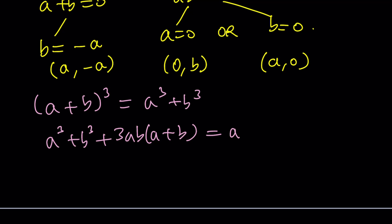If you're not familiar with this identity, that's fine. You just need to factor a little bit. a cubed plus b cubed cancel out, and we end up with the same thing. Divide by 3, you're going to get ab times a plus b equals 0, which gives us the exact same solutions.